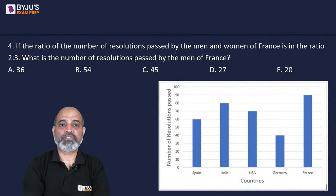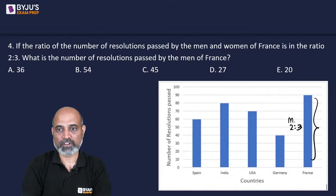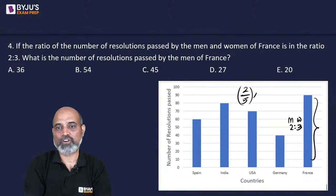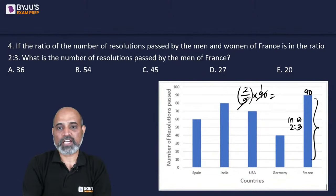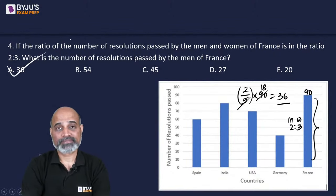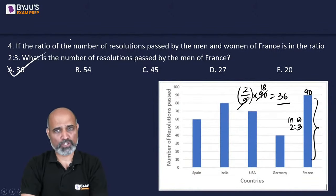Next: if the ratio of resolutions passed by men and women of France is 2:3, what is the number of resolutions passed by the men of France? The total for France is 90. Men represent 2 out of 5 parts, so men = (2/5) × 90 = 36. The answer is option E. These are very simple, basic questions based on sums, ratios, and percentages.